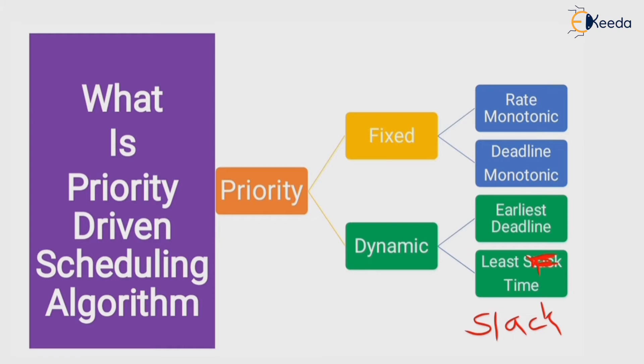The last one is least slack time. It assigns priority based on the slack time of a process. Slack time is the amount of time left after a job if the job was started now. The algorithm is also known as least laxity first.